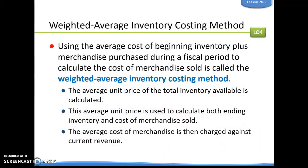The other method is called the weighted average inventory costing method. This uses the average cost of beginning inventory plus merchandise purchased during a fiscal period to calculate the cost of merchandise sold. The average unit price of the total inventory available is calculated, and this average unit price is used to calculate both ending inventory and cost of merchandise sold. The average cost of merchandise is then charged against current revenue.